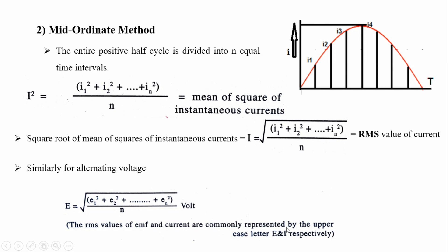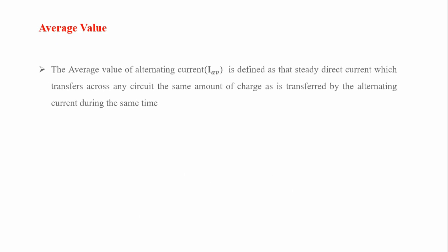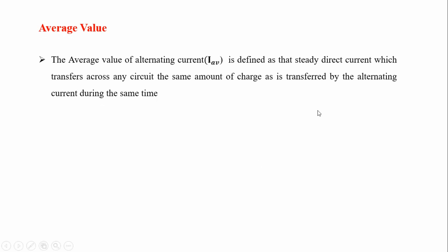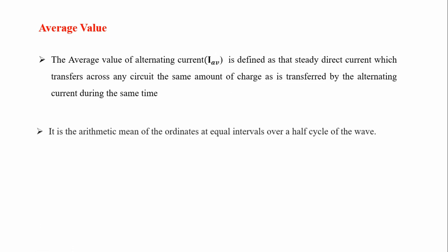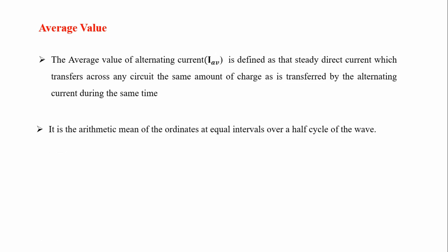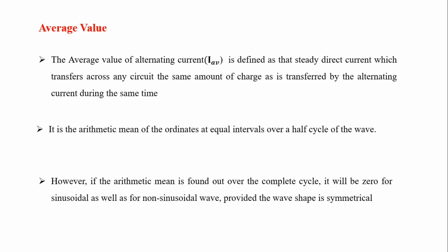For alternating voltage, the RMS value of E is similarly √[(E1² + E2² + ... + En²)/n]. RMS values of EMF and current are commonly represented by uppercase letters E and I. The average value: by basic definition, it is the steady current which transfers across any circuit the same amount of charge as is transferred by the alternating current during the same time. In RMS we dealt with heat; here we deal with charge.